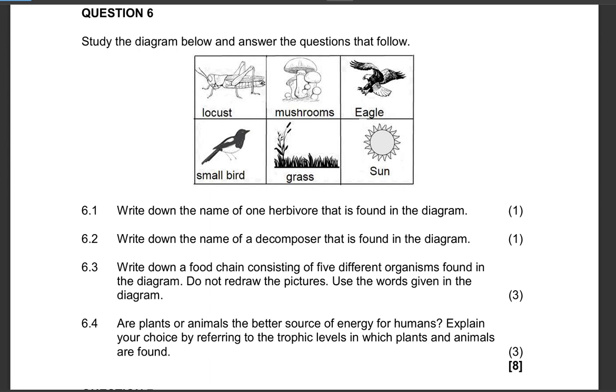Study the diagram below and answer the questions that follow. So you have a diagram which basically has organisms here and the sun. We've got the sun, a plant, and the rest are obviously animals. Write down the name of one herbivore that is found in the diagram. Found in the diagram, herbivore feeding on plants, that is the locust.